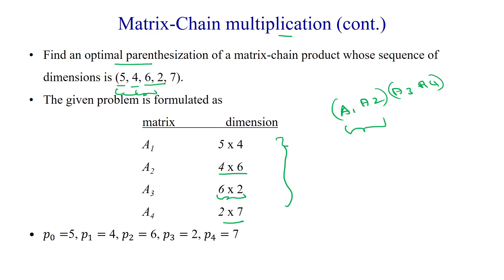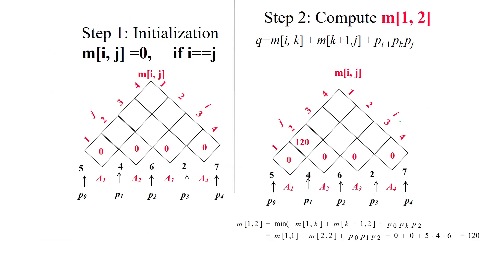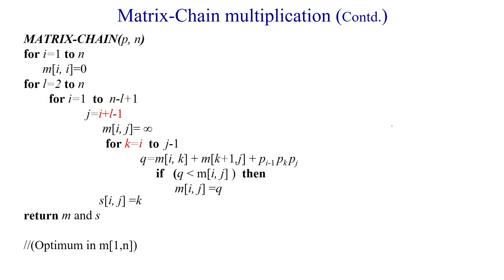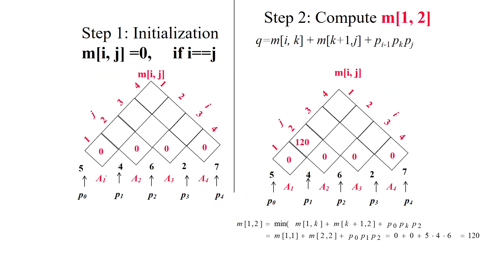When applying different kinds of parenthesis, we want the minimum number of scalar multiplications. As per the algorithm, initially we take m[i,i] — when i and j are at the same location (same row and column) — we set that position to 0.